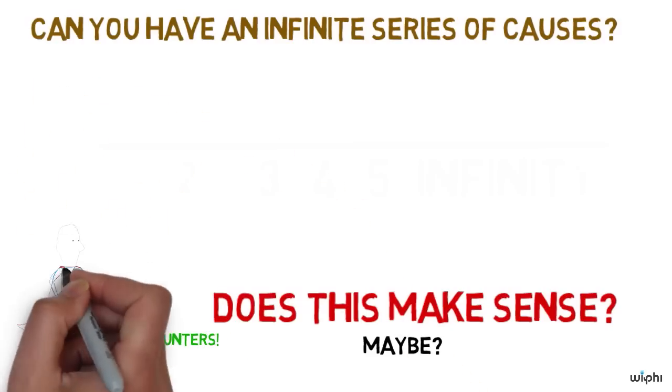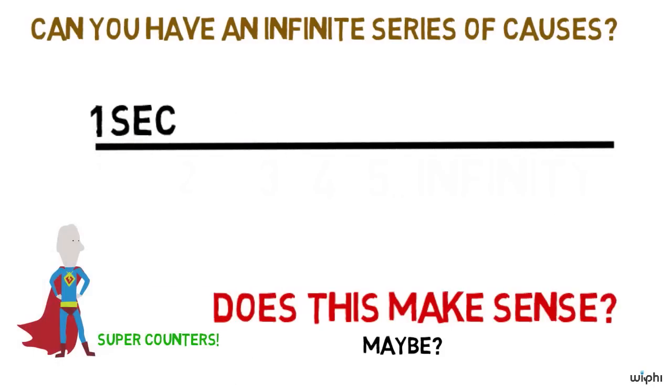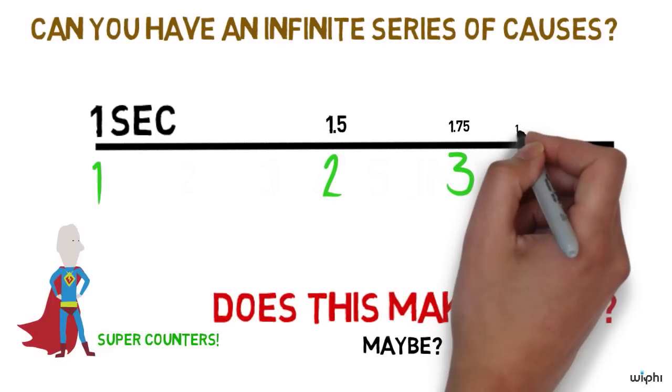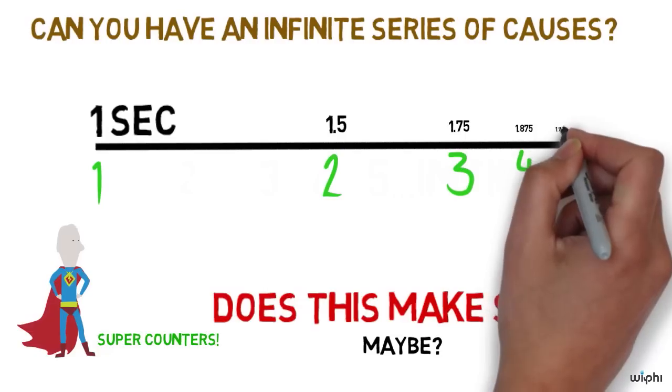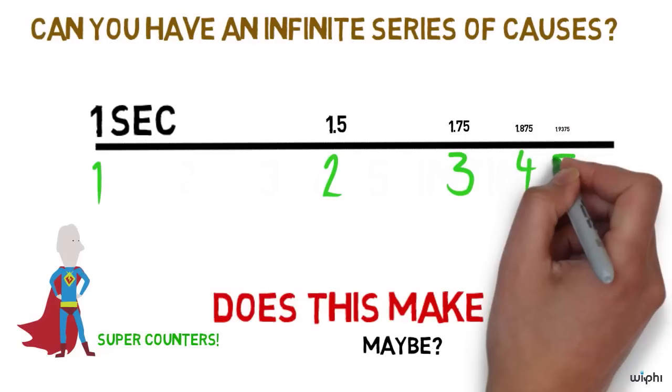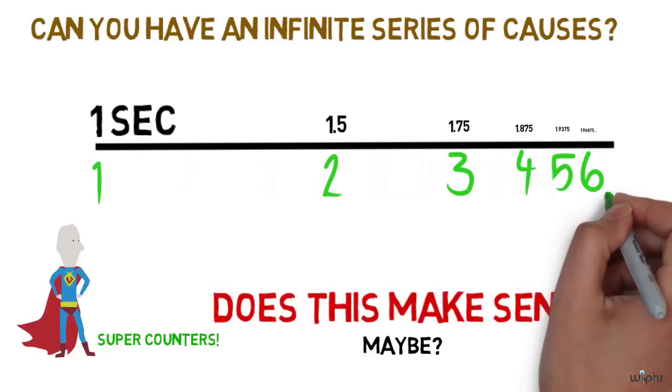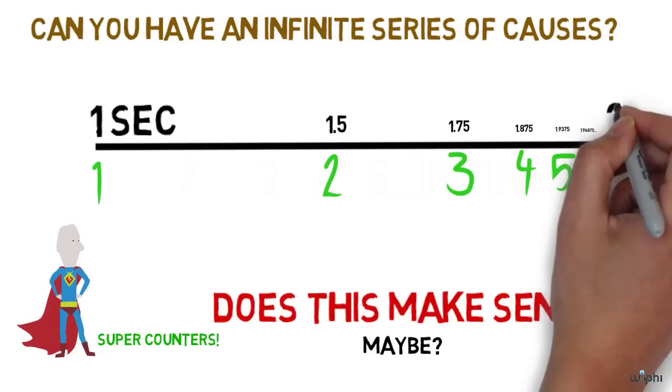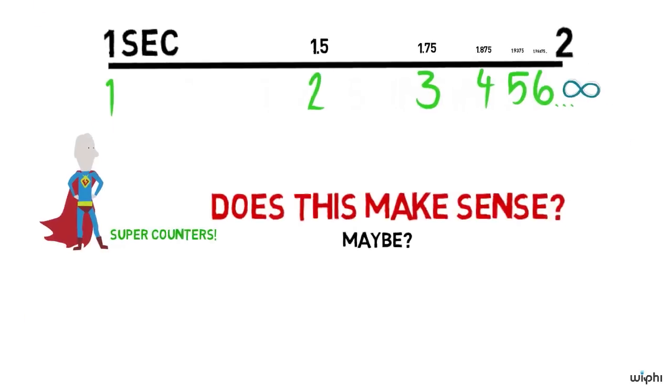Imagine a super counter. A super counter is someone who counts like this. In the first second, they say 1. In the next half second, they say 2. In the next quarter second, they say 3. In the next eighth second, they say 4. Super counting this way, they could count an infinite number of times before the next second passes. As long as at least two seconds have passed in the universe, and we could all agree to that, then an infinite series has passed.